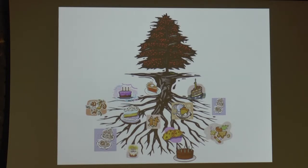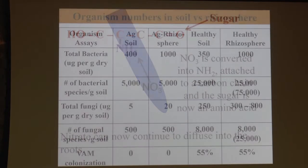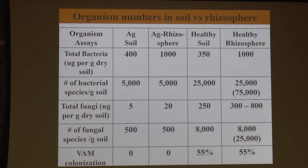That NH2 could go on the first carbon, it could go on the third, fourth — whatever, it just depends on what the plant requires. That amino acid can then be carried by the flow in the xylem to wherever your plant requires it. But if my plant also needs sulfur, under all the conditions your plant is going to be experiencing through the growing season, will we have the protective organisms there? We've got 5,000 different species and lots of biomass because the plant is feeding them.